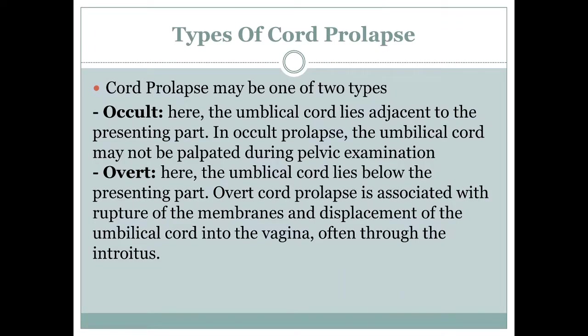There are basically two types of cord prolapse: occult cord prolapse and overt cord prolapse. In occult cord prolapse, the umbilical cord lies adjacent to the presenting part, and it may be difficult to palpate during a vaginal examination. While in overt cord prolapse, the umbilical cord is either felt below the presenting part or, very commonly, it protrudes through the introitus.